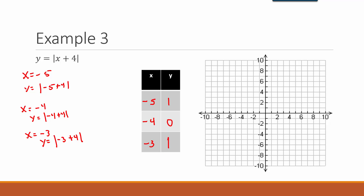Let's plot those points: negative 5, 1; negative 4, 0; and negative 3, 1. This gives us a V-shaped figure because it's an absolute value equation, so the graph looks something like that.